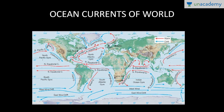Here you can see the different ocean currents. The ocean currents of the North Atlantic Ocean — that is the North Equatorial Current, Gulf Stream, North Atlantic Drift, and Norwegian Current. The red ones are the warm ocean currents and the blue ones are the cold ocean currents.